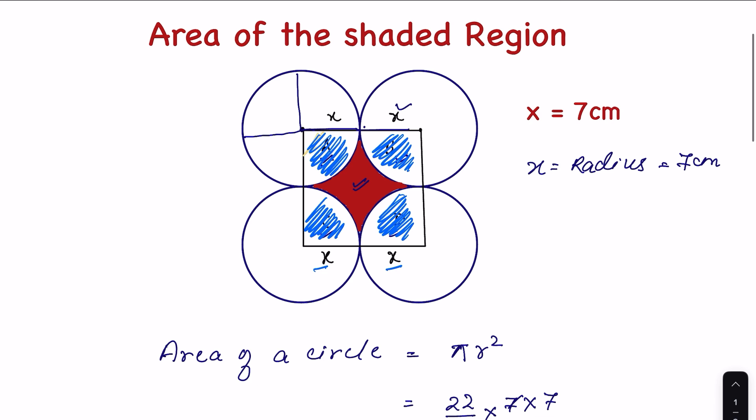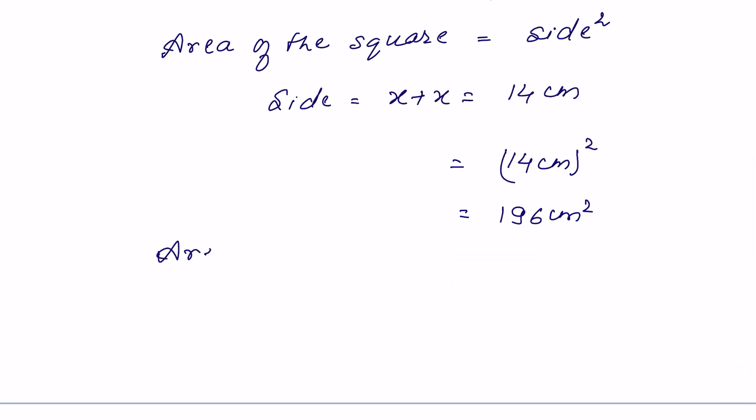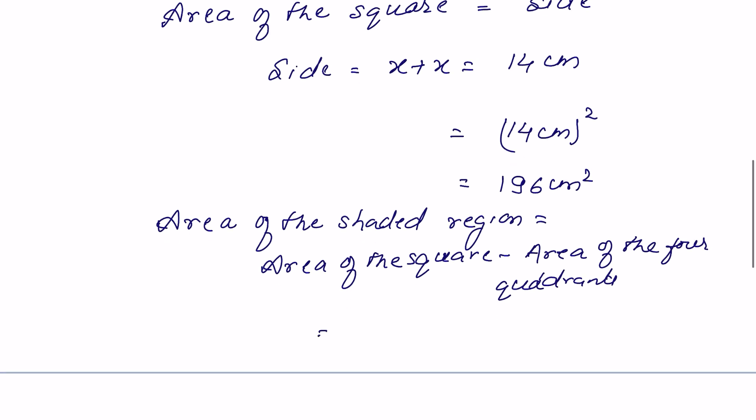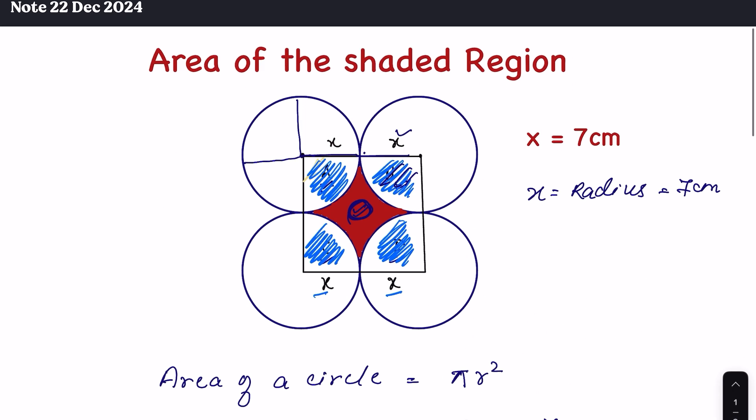Now we know the area of the square. If we subtract the area of these four quadrants, then we can find the area of this part. So area of the shaded region equals to area of the square minus area of the four quadrants. So it is equal to 196 minus 154 cm², or it is equal to 42 cm².